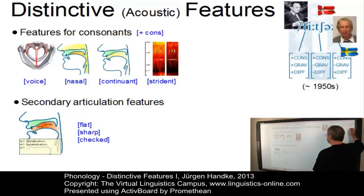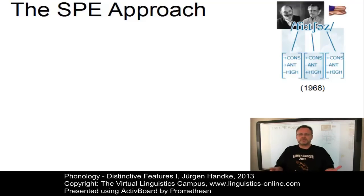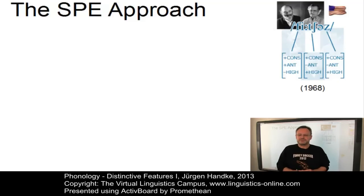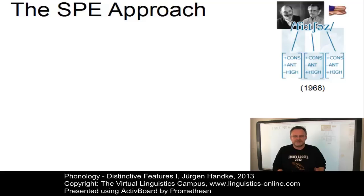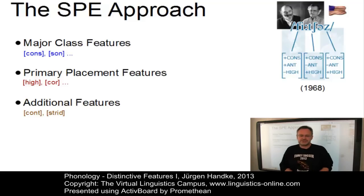The most influential approach of our time is the Sound Pattern of English approach, essentially a book published in 1968 by Noam Chomsky and Maurice Halle. They defined distinctive features in two ways: as units that capture phonological contrast and patterns of languages, and as means that describe the phonetic content of segments. The Sound Pattern of English system can be divided into three general groups of features: major class features, primary placement features, and additional features.